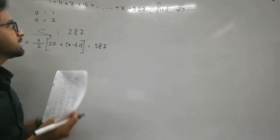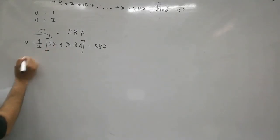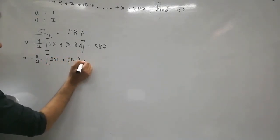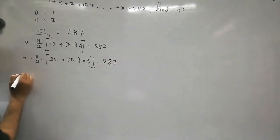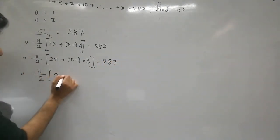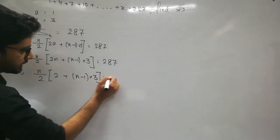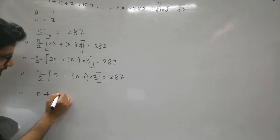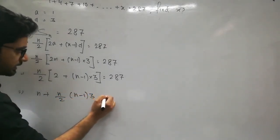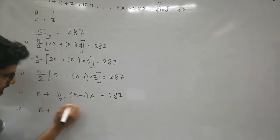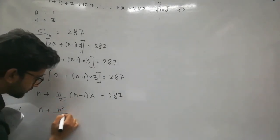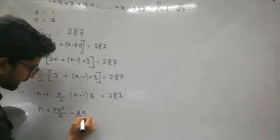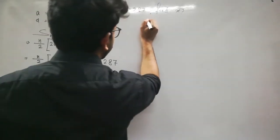Simplifying: n + n/2 × (n−1)×3 = 287. Expanding: n + 3n²/2 − 3n/2 = 287. Multiplying through by 2: 2n + 3n² − 3n = 574, which gives 3n² − n − 574 = 0. We now solve this quadratic equation.